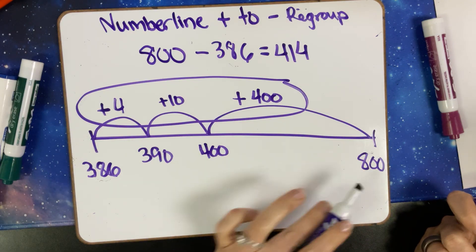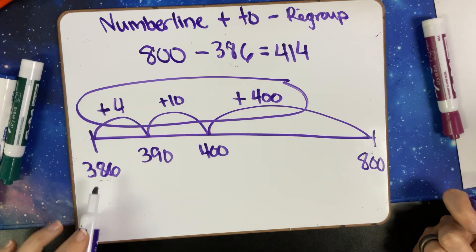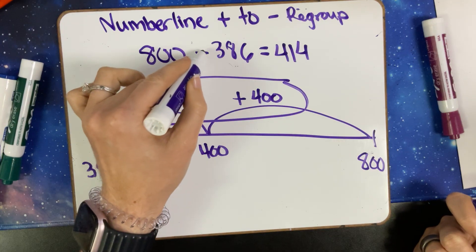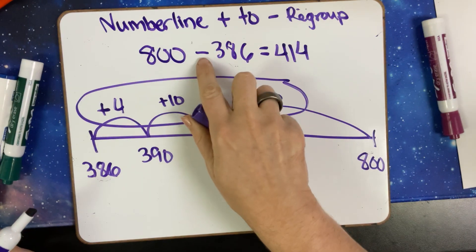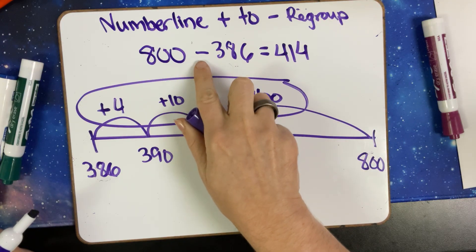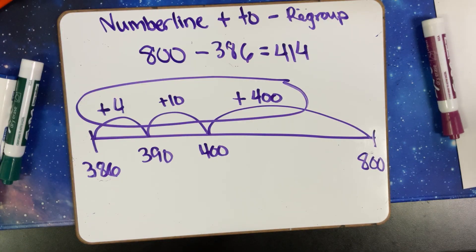The tricky thing is they have to have both numbers on the number line, and they have to not be tricked by this operation symbol. So it can be tricky.